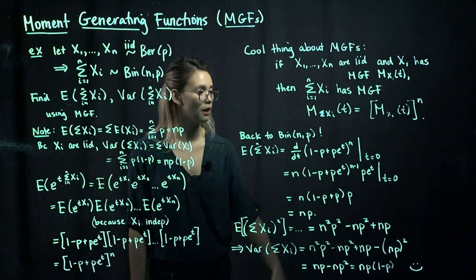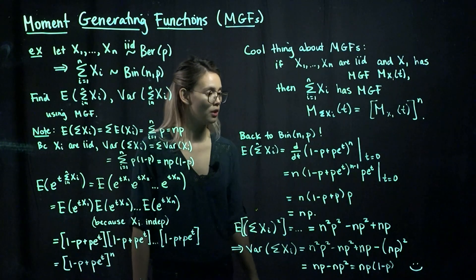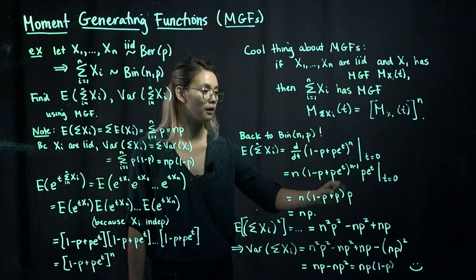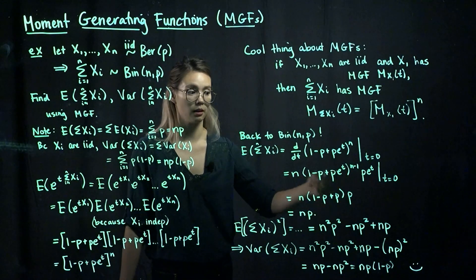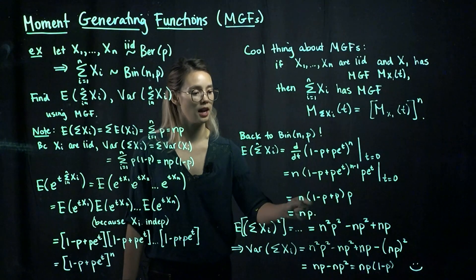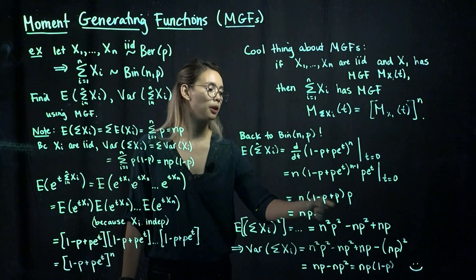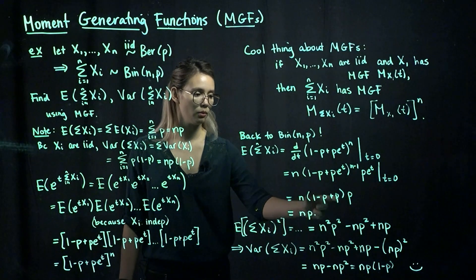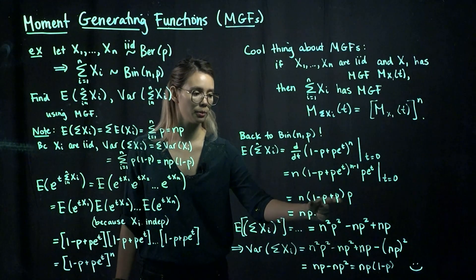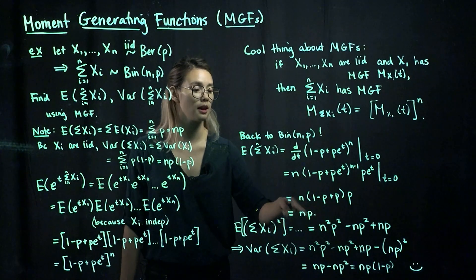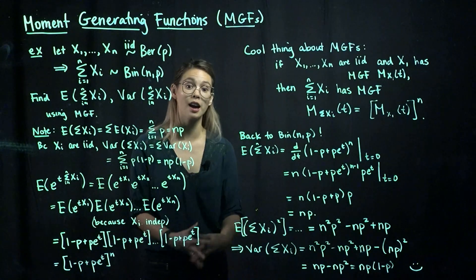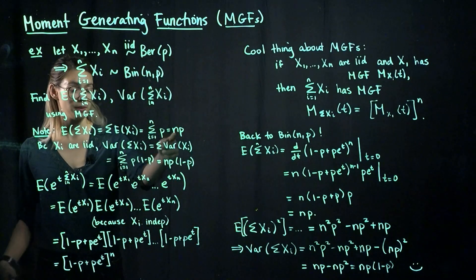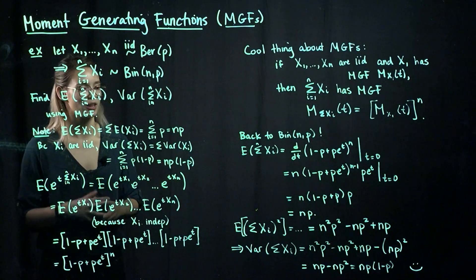Evaluating at t equals 0, all the e to the t terms become e to the 0, which is 1. So we get n times (1 minus p plus p) times p, and the quantity in parentheses is just 1, leaving us with n times p. This matches what we got before, so that's great.